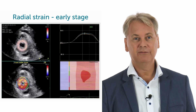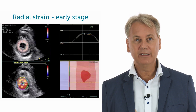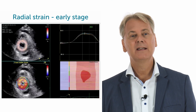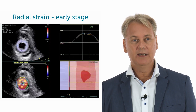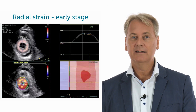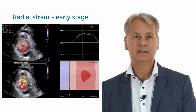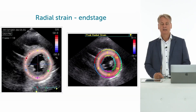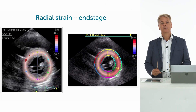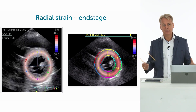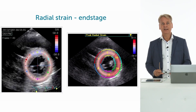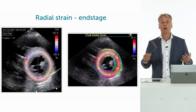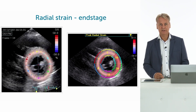Just to exemplify this again, you see that radial function in this specific patient is quite normal, despite a significantly reduced longitudinal strain. In the end stage of the disease, radial strain will also deteriorate, and then you will have global left ventricle dysfunction.